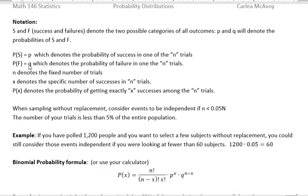N denotes the fixed number of trials. X denotes the specific number of successes that we're looking for in those N trials. And the probability of X denotes the probability of getting X successes among the N trials. So we'll have to do a few examples for that to make sense to you.